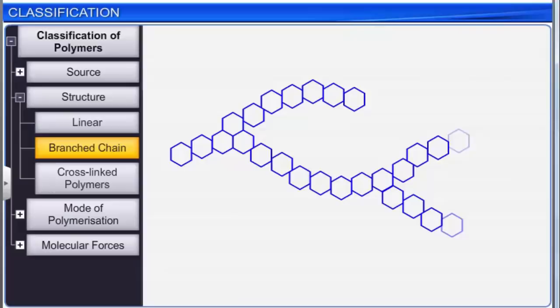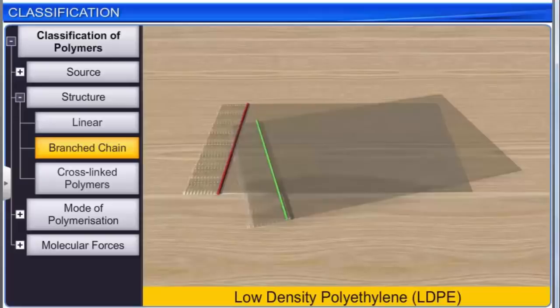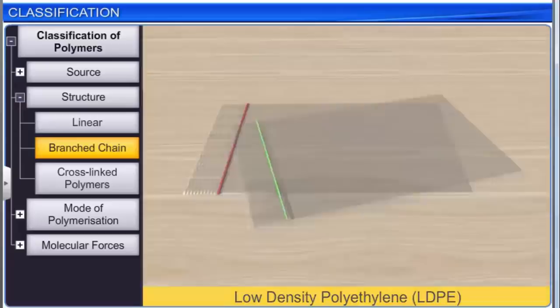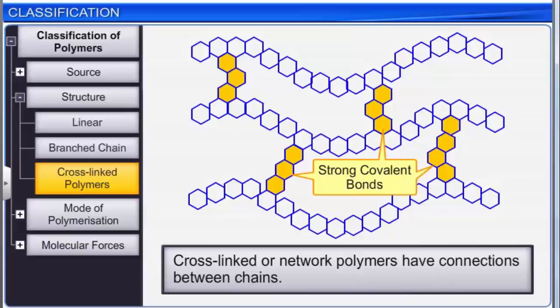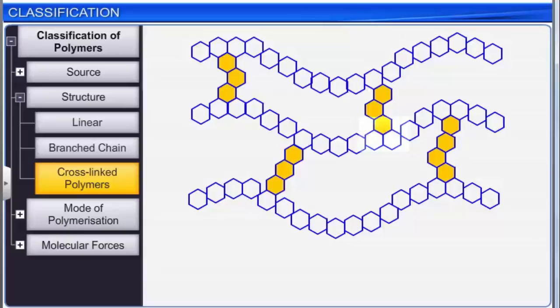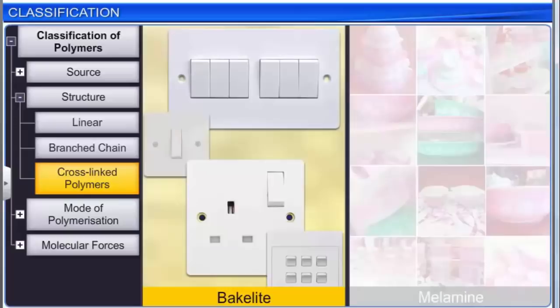Branched chain polymers contain linear chains that have some branches. One common example is low-density polyethylene (LDPE). Cross-linked or network polymers have connections between chains via strong covalent bonds linking various linear polymer chains. The monomers in cross-linked polymers must be bifunctional or trifunctional, meaning they have more than one reactive center. Examples include Bakelite and Melamine.